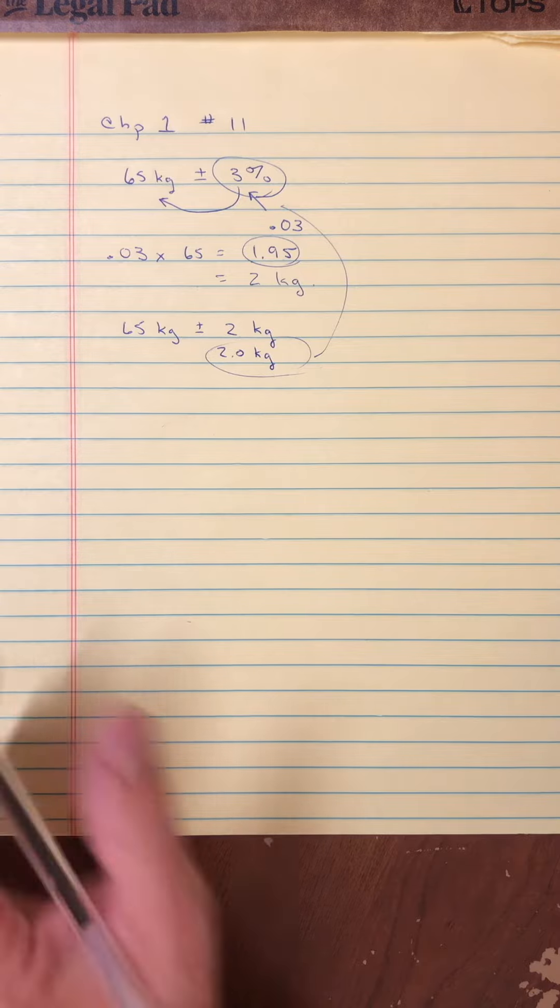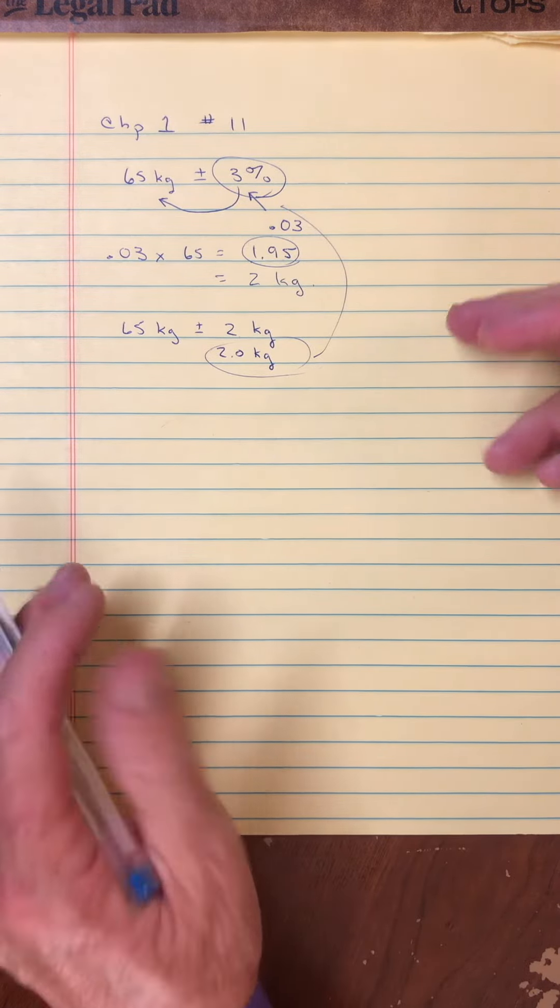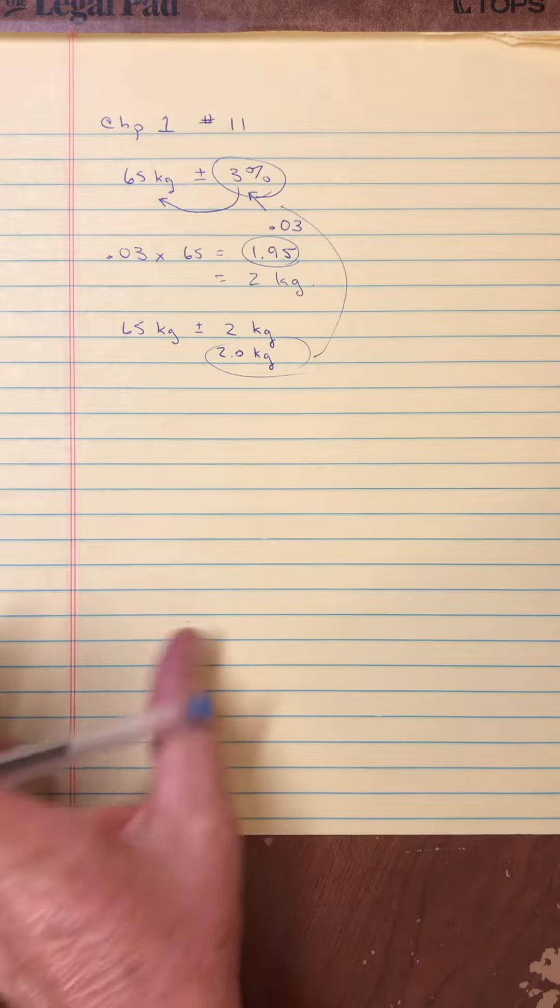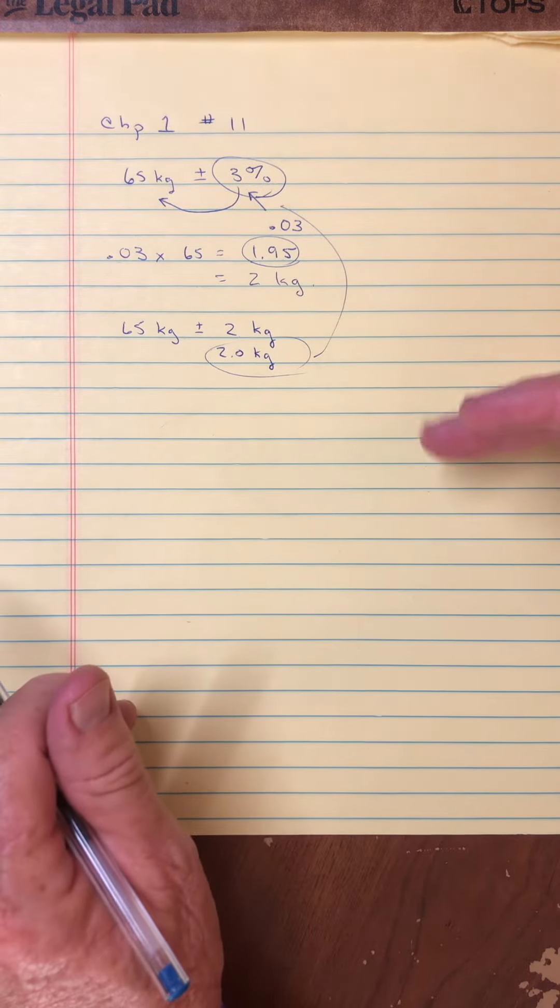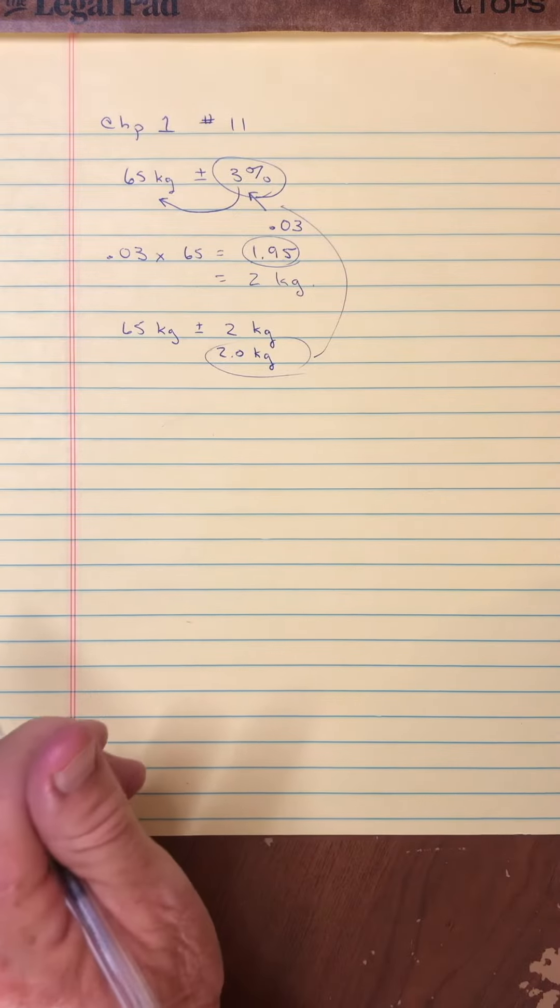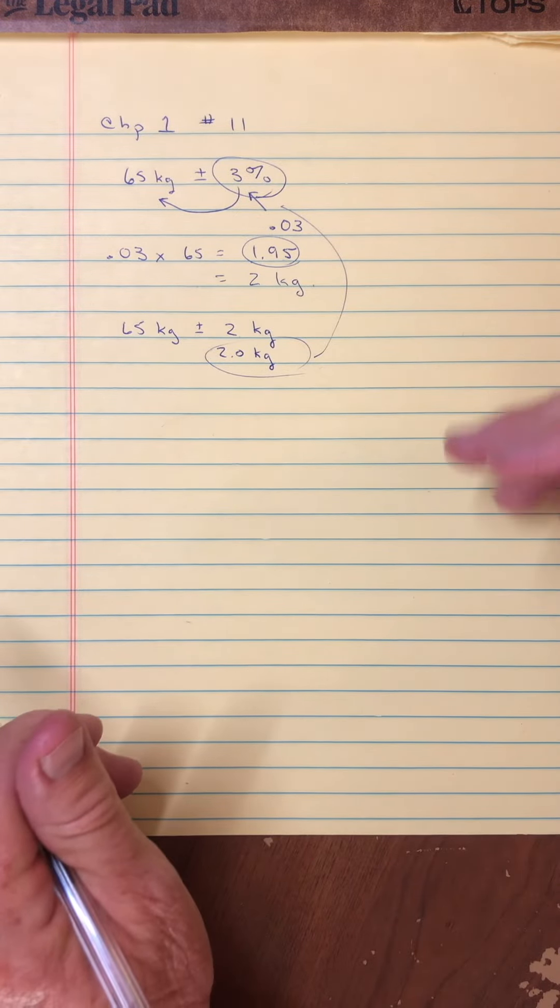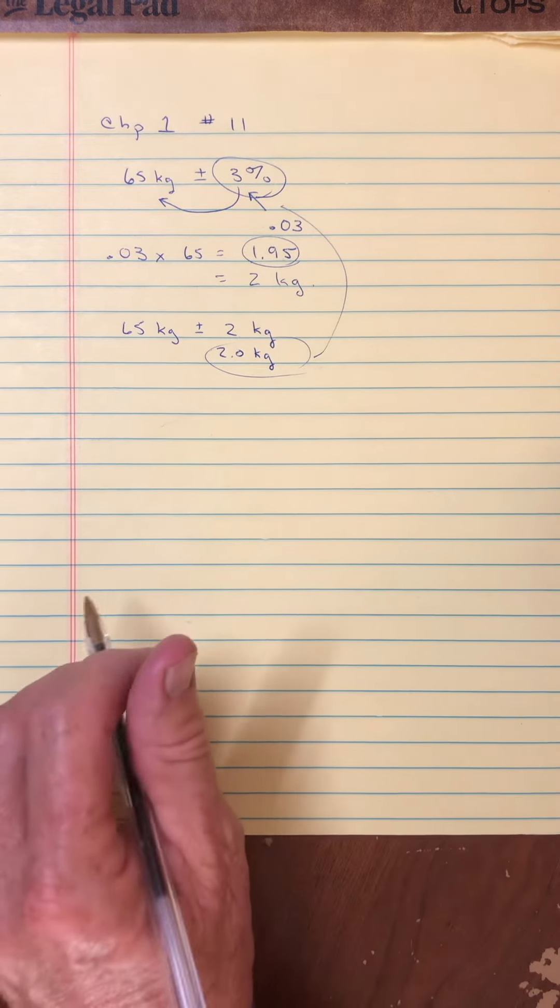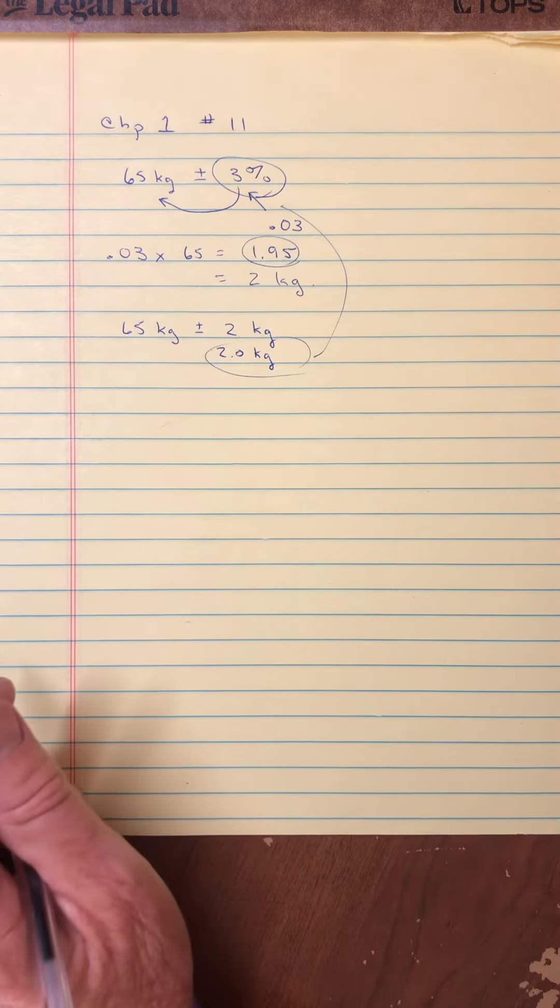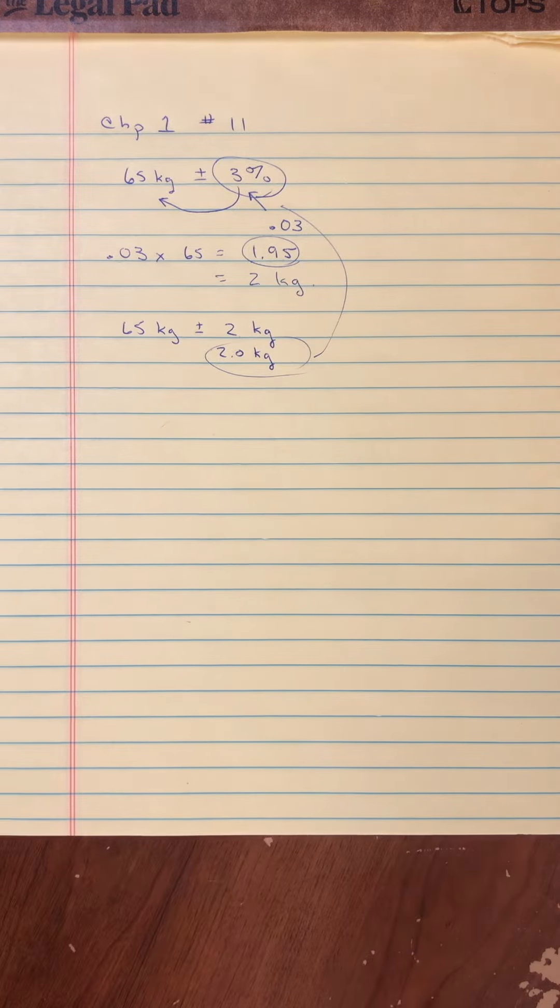All right. But there's a conversion from percentage to absolute. Whereas number 24, if you're struggling with that, go to the supplemental example. Maybe I'll clip it off and send that out too as some help. But that is the other way around, going from absolute to percentage and then using it in a calculation. All right. Hope that helps. Bye now.